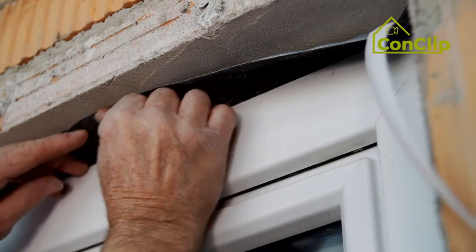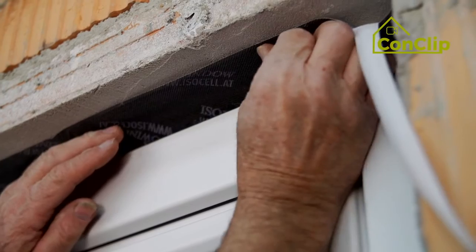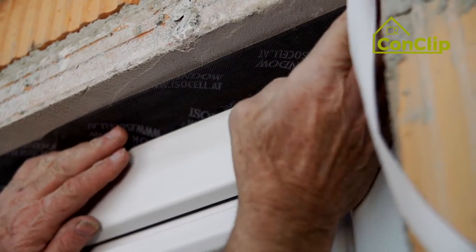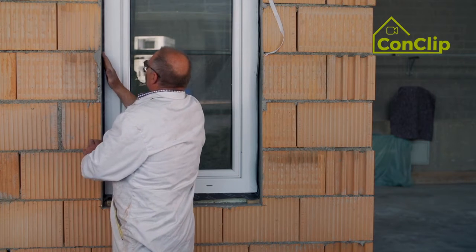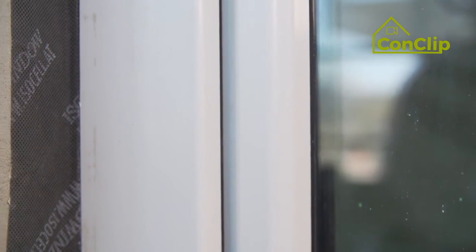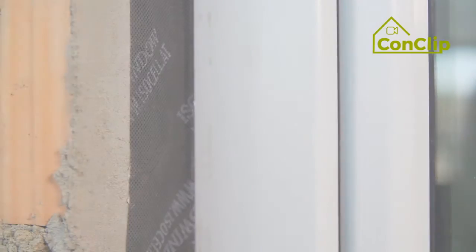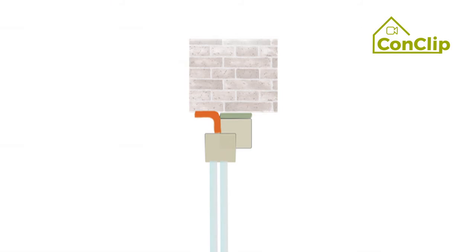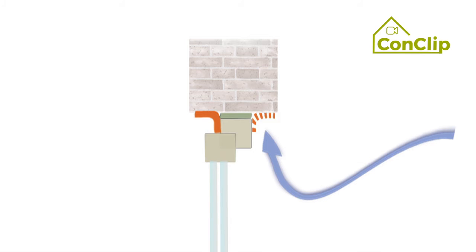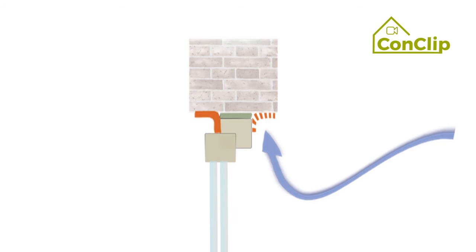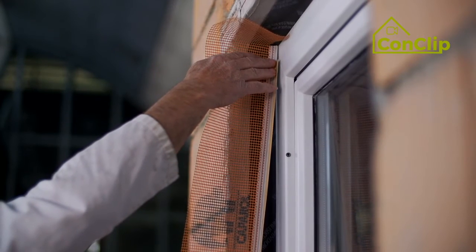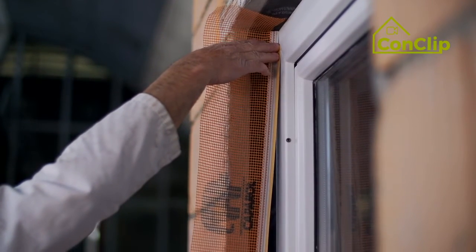The self-adhesive tape has to be attached airtight to the soffits inside and outside. Apply the tape smoothly and make sure the corners are closed evenly. Moist and cold air are allowed to enter through the outside sealing level to the inner sealing — the inner side has to be more airtight. Now plaster profiles for exterior plaster are attached to the window.